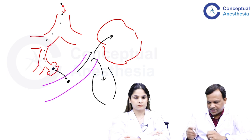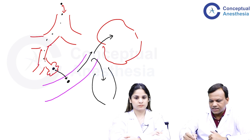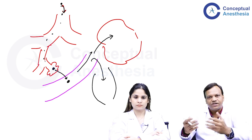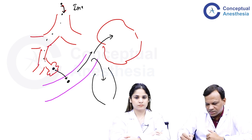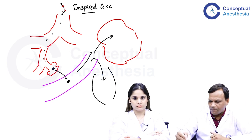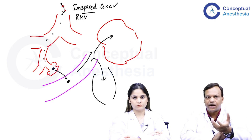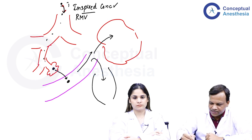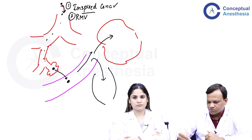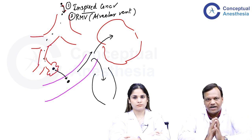Which factors affect anesthesia caused by inhalational anesthetic agents? The most important is how much anesthetic agent we are giving — that is, the inspired concentration of the anesthetic agent. Second is how much respiratory minute volume or alveolar ventilation we are providing. These two factors — alveolar ventilation and concentration of anesthetic gas in the inspired air — affect the anesthesia.